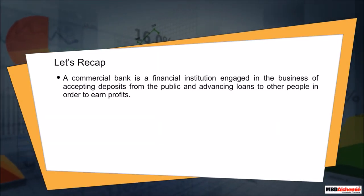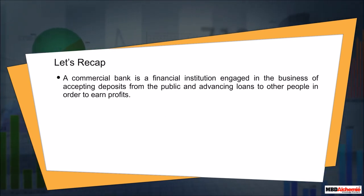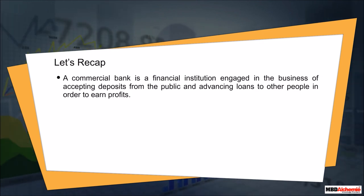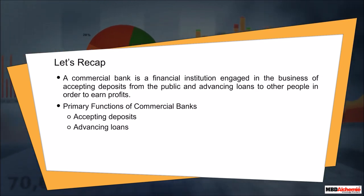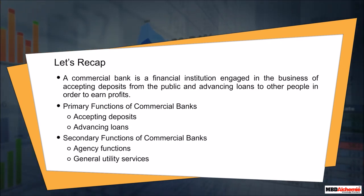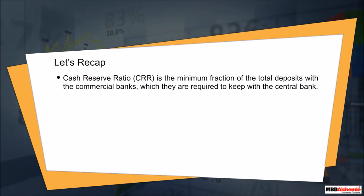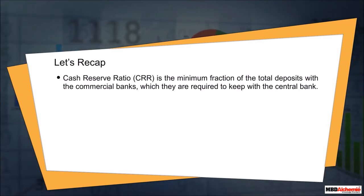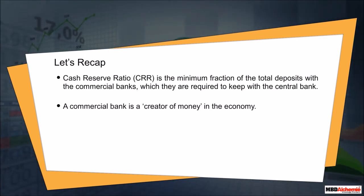To recap: a commercial bank is a financial institution engaged in accepting deposits from the public and advancing loans to earn profits. Primary functions include accepting deposits and advancing loans. Secondary functions include agency functions and general utility services. The Cash Reserve Ratio (CRR) is the minimum fraction of total deposits that commercial banks must keep with the central bank. A commercial bank is a creator of money in the economy.